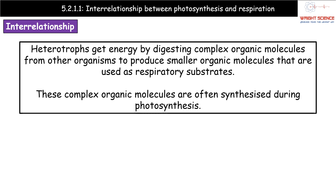Another term we should look at is heterotroph. Heterotrophs get their energy by digesting complex organic molecules that other organisms have provided to them — things like animals. Animals eat something like a plant, digest those complex organic molecules, and produce smaller organic molecules that can be used as a respiratory substrate. They have not created those organic molecules themselves; they've had to consume another organism in order to get them.